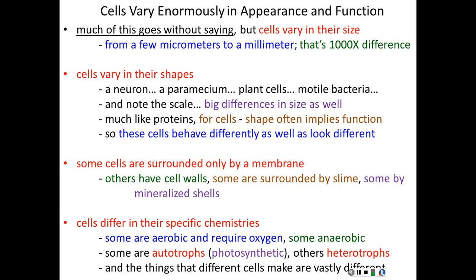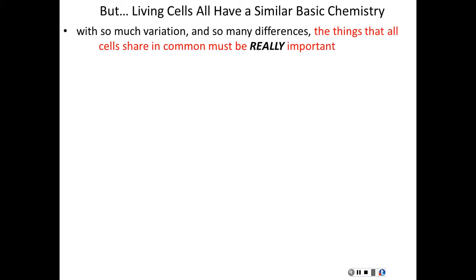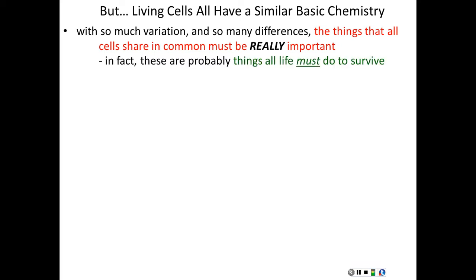Each of these differences between cells — their sizes, shapes, and chemistries — is an opportunity to understand what makes cells tick. But all living cells on this planet also share a great deal of similarity, especially in their very basic biochemistry. With so much variation between cells, the things that all cells must share in common must be really important — indeed critical for survival. Otherwise, with so many differences, why would they share any similarities at all?